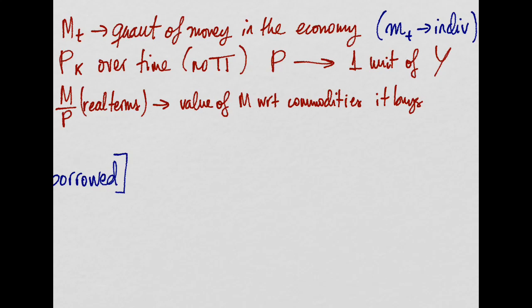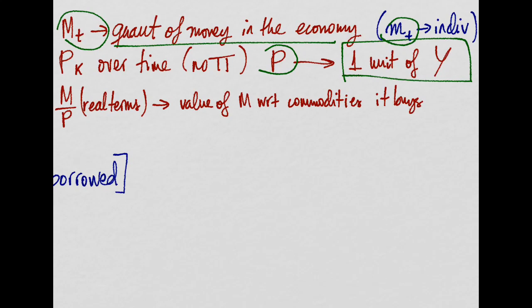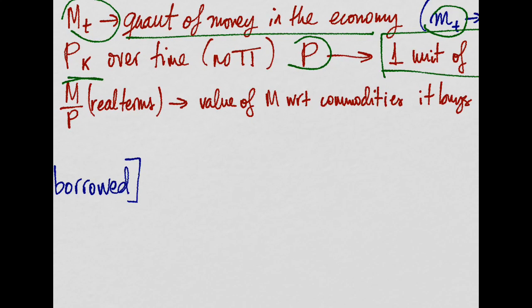We also have some quantity of money in the economy, big M, and some money held by each individual, small m. We have the price by which you can buy or sell one unit of output. Again, we have that that price doesn't change. It's constant. There is no inflation. So we can express money in real terms by dividing it over P. That is, the value of money with respect to the commodities that he buys.